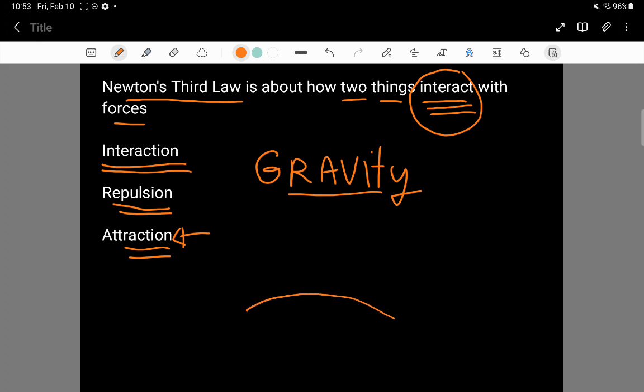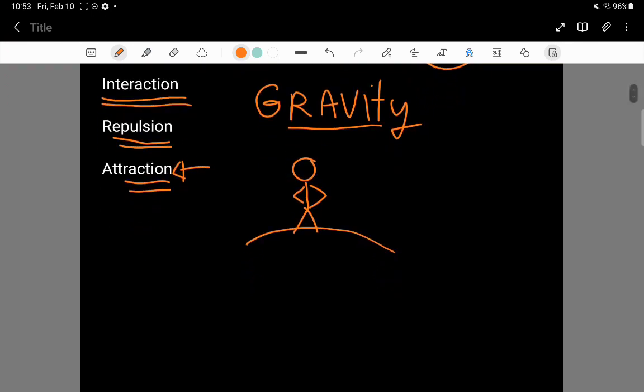And you'll notice that when you imagine a person standing somewhere on the earth. So here's this person standing on the earth, and the person and the earth are attracted towards each other. And in this attraction, there are two forces.